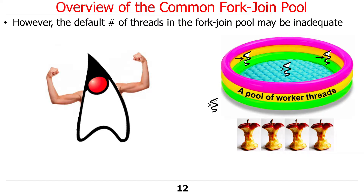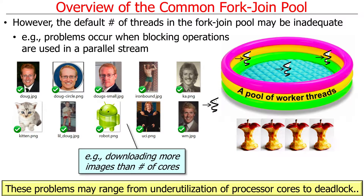There are situations, however, where the default number of threads in the common fork-join pool may not be adequate. For example, let's assume we have four cores but we want to download ten images. If we're not careful and we have more work to do than we have threads in our pool, potentially bad things could happen. One issue is you might just underutilize the processor cores, which will slow things down more than it should. The other thing you could end up with is some kind of deadlock. Let's talk about underutilization.